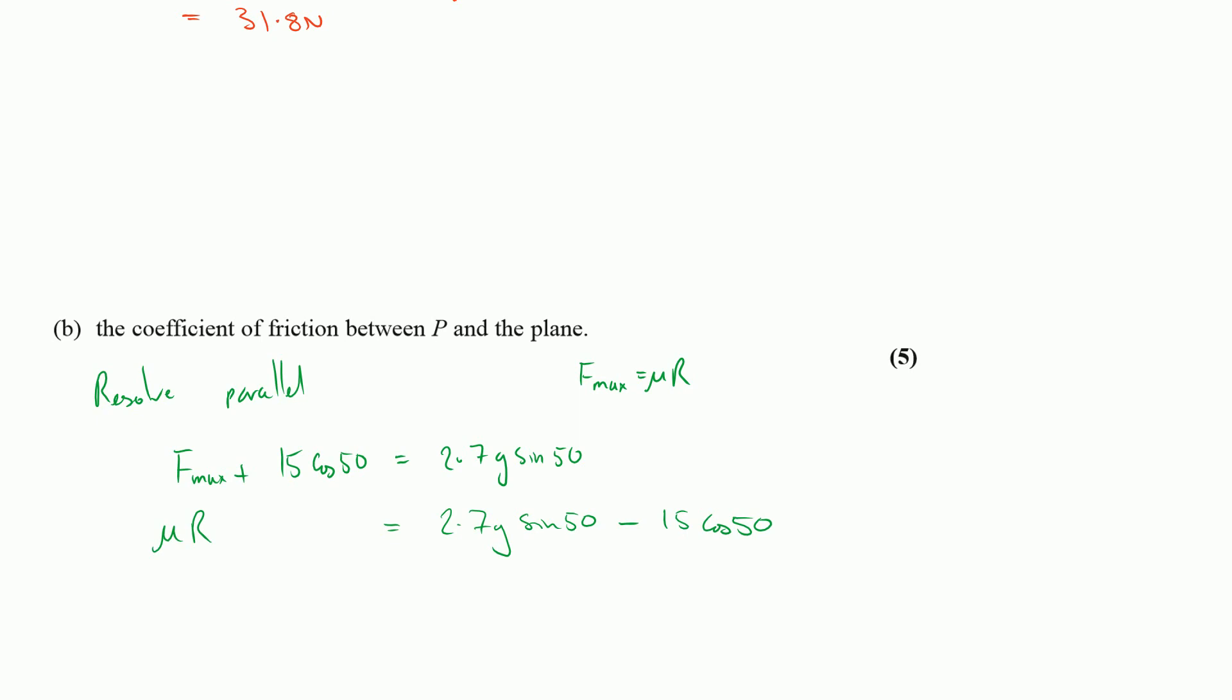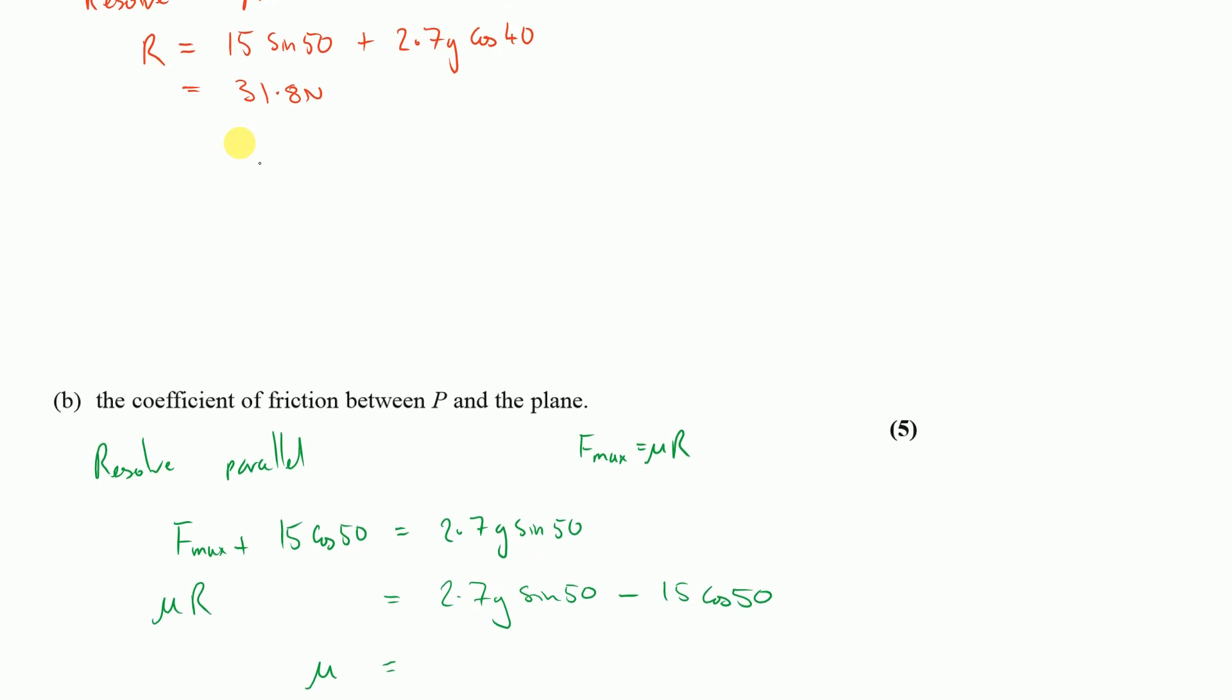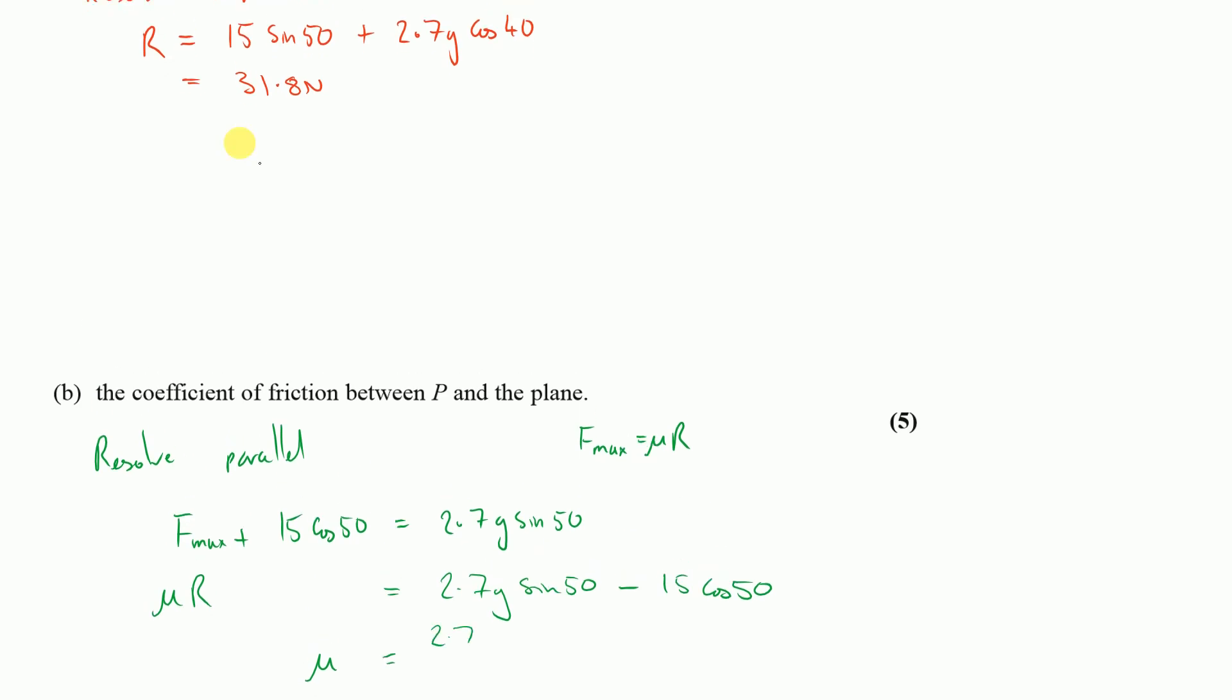I can use my value of R from the first part of this question, which was, using the exact value, 15 sine 50. So let's go for 2.7 G sine 50 minus 15 cos 50, all divided by my exact value, which was 15 sine 50 plus 2.7 G cos 40. Again, popping that onto my calculator is going to give me a value here of 0.232.